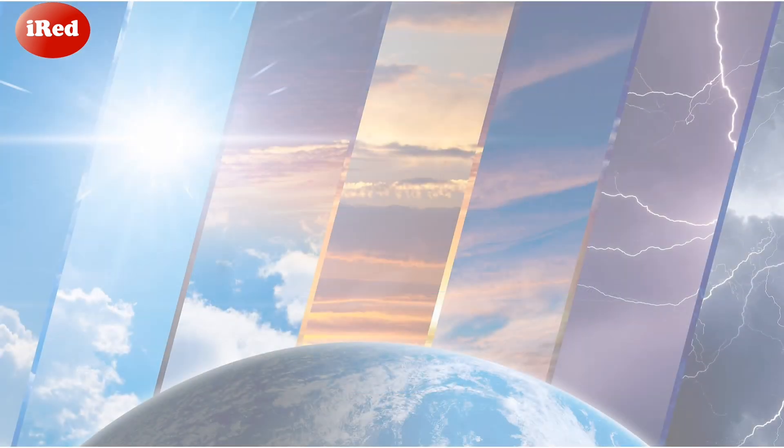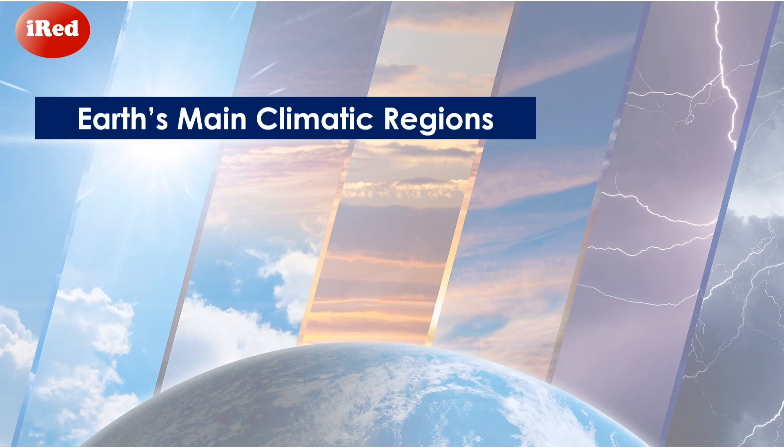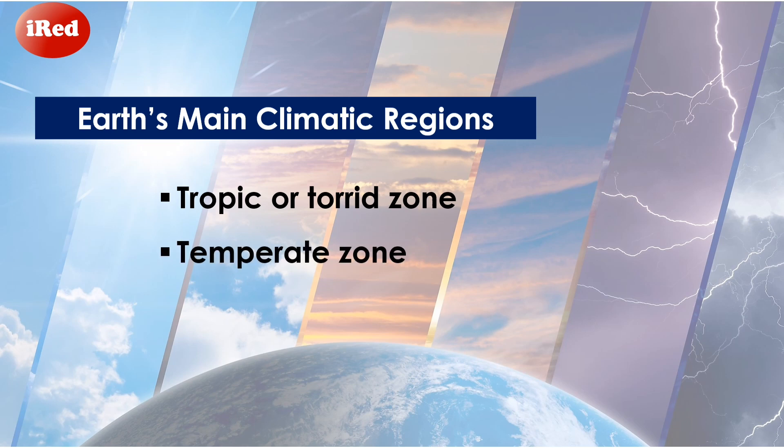The Earth has three climatic distinct regions, which are distinguished by these major latitudes. First, the Tropic or Torrid Zone, the Temperate Zone, and the Polar Zone. Now, let's locate these zones on the globe.